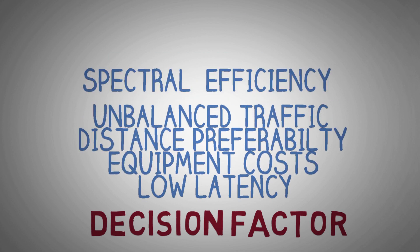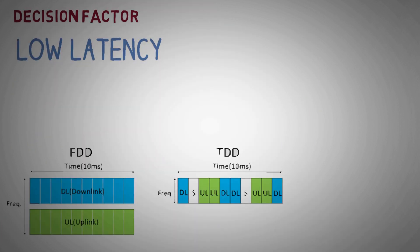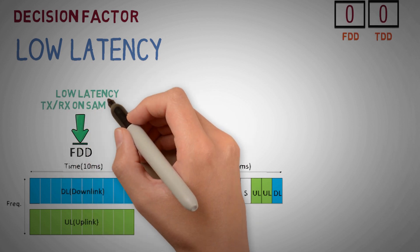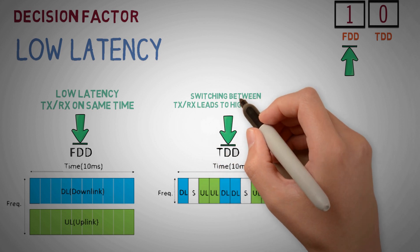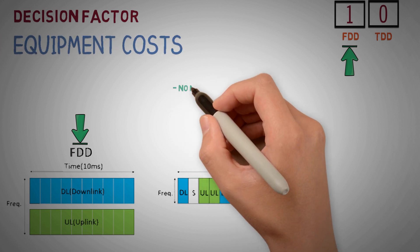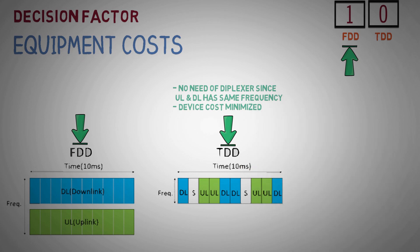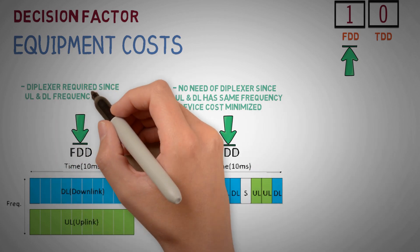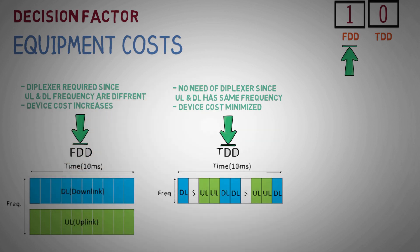Factors that help an operator decide whether to use FDD or TDD include: Low latency — FDD offers very low latency since transmit and receive functions operate simultaneously and continuously, whereas in TDD the switch from transmit to receive incurs a delay, causing greater inherent latency. Equipment costs — no diplexer is needed to isolate the transmitter and receiver in TDD, whereas in FDD a diplexer is needed. This is a key aspect as cost of user equipment is important given the vast numbers produced, giving TDD the advantage.